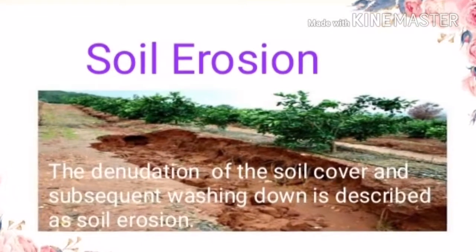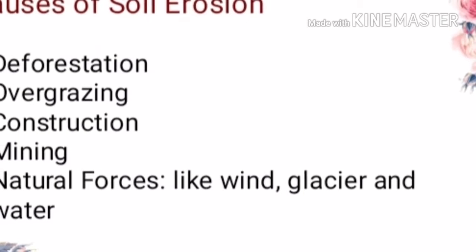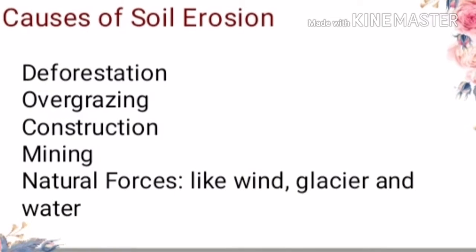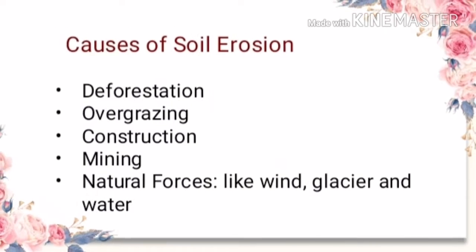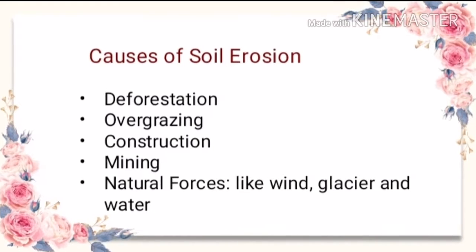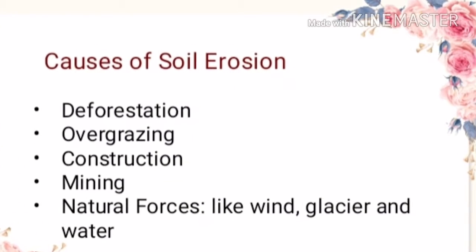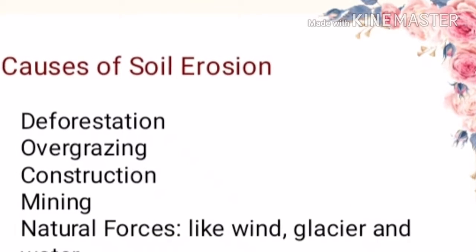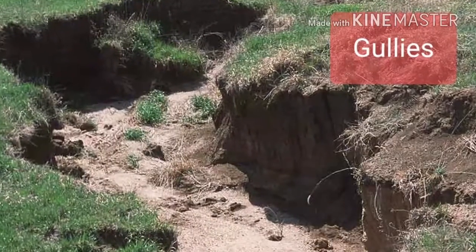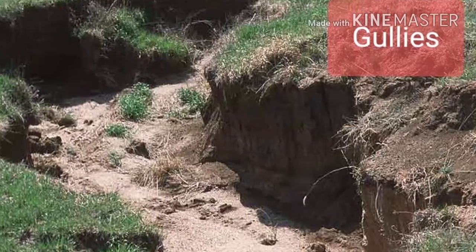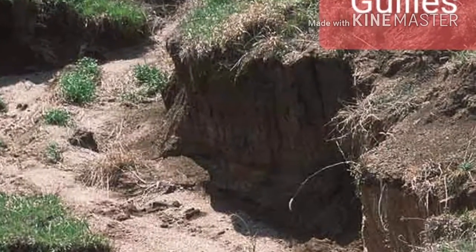The causes of soil erosion include human activities such as deforestation, overgrazing, construction, and mining. Natural forces like wind, glaciers, and water are also causes of soil erosion. Running water cuts through clay soils and makes gullies. The land becomes unfit for cultivation and is known as bad land.